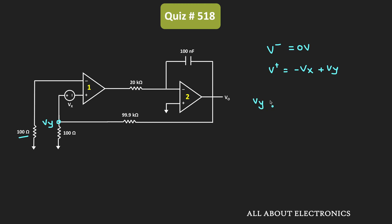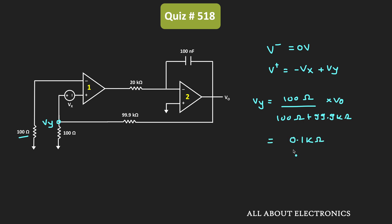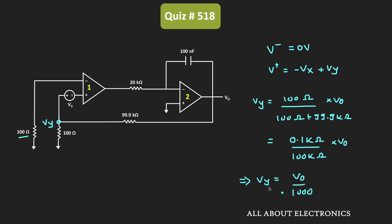This voltage Vy is equal to 100 ohm divided by 100 kilo ohm times Vout. That means Vy is equal to Vout divided by 1000. Initially when the circuit is turned on, Vout will be equal to 0, and therefore Vy will also be equal to 0.